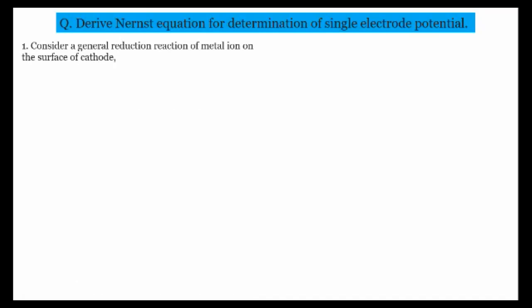First of all we will talk about the single electrode potential. For this purpose we will consider the general reduction reaction of the metal ion on the surface of the cathode. The general reaction is: Mn+ (aqueous) + n electrons → M (solid), reversible. Reduction means that particular species acquires electrons and comes to its neutral state — if a species has n+ charge and n electrons arrive, the charge becomes neutral and it gets reduced.